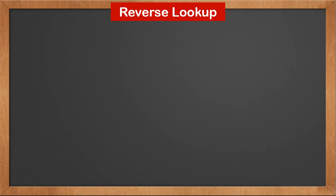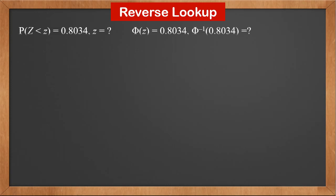We know how to look up probabilities in the z table. Sometimes we also need to do a reverse lookup. For example, if P(Z < z) = 0.8034, what is z? It can also be written as: phi(z) = 0.8034, what is inverse phi(0.8034)?